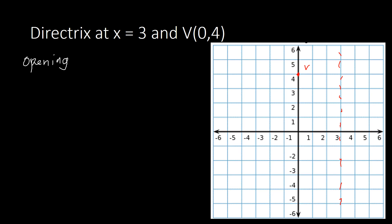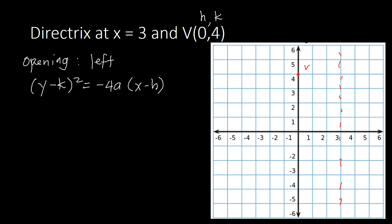Since this parabola is opening to the left, we are going to use the standard equation: (y − k)² = −4a(x − h). By then, we already have our vertex, where h is the x-coordinate and k is the y-coordinate. We still need to find a, and after getting everything, we just plug in our values.